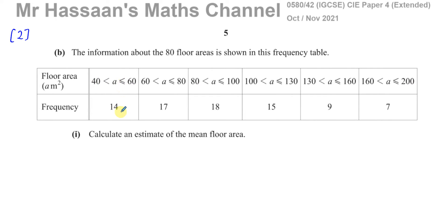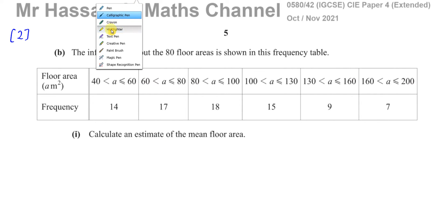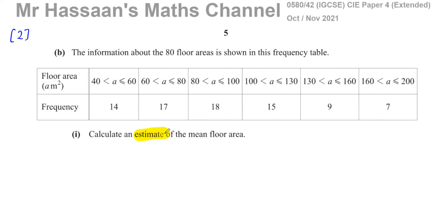We don't know exactly the floor area of each of these houses, but all 14 have an area somewhere between those values. For example, 15 houses have a floor area between 100 and 130 meters squared. We can't find the exact mean, but we can find an estimate of the mean, as they ask us to do here.